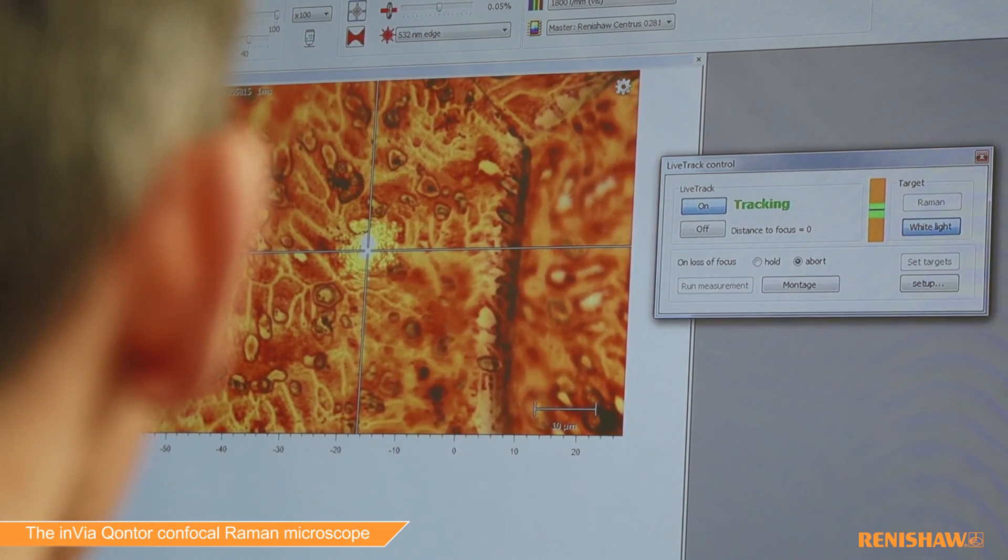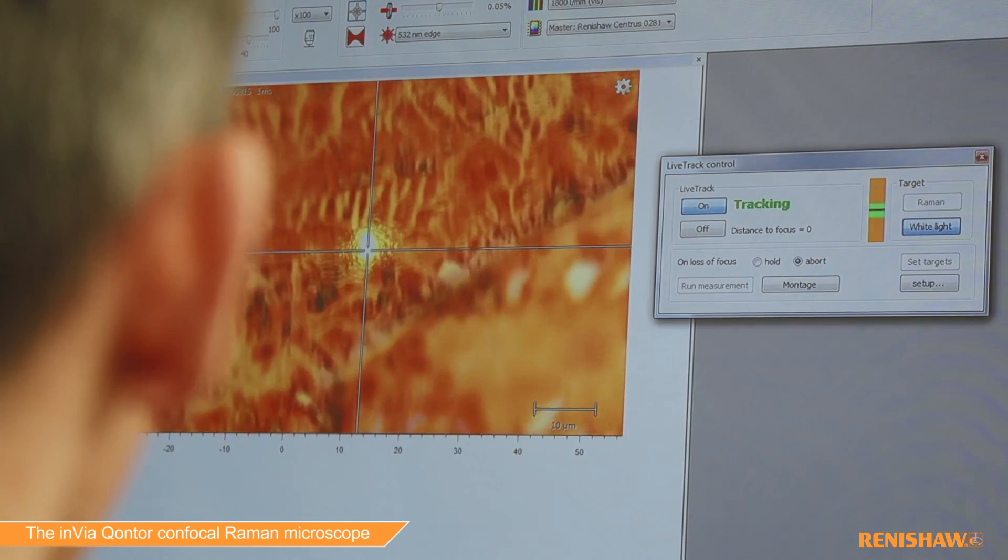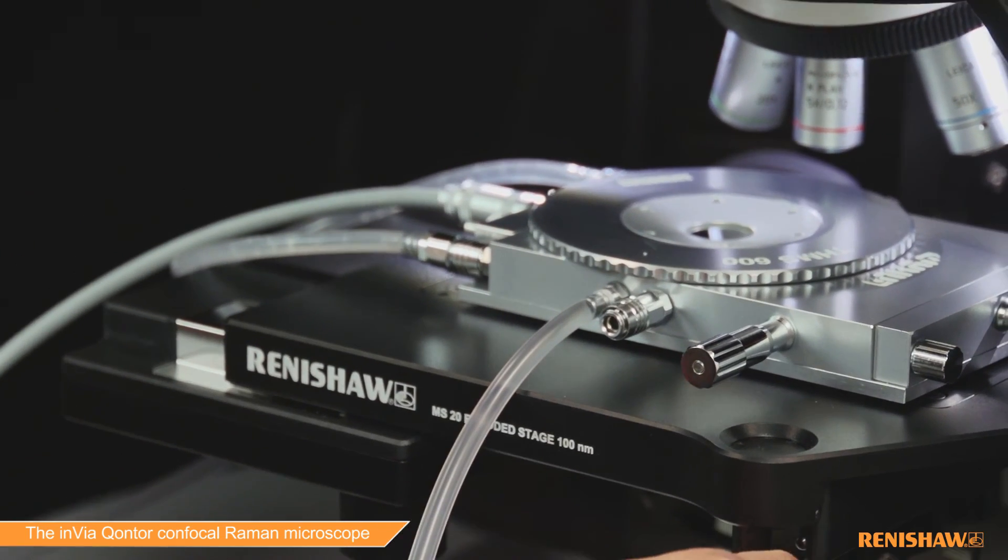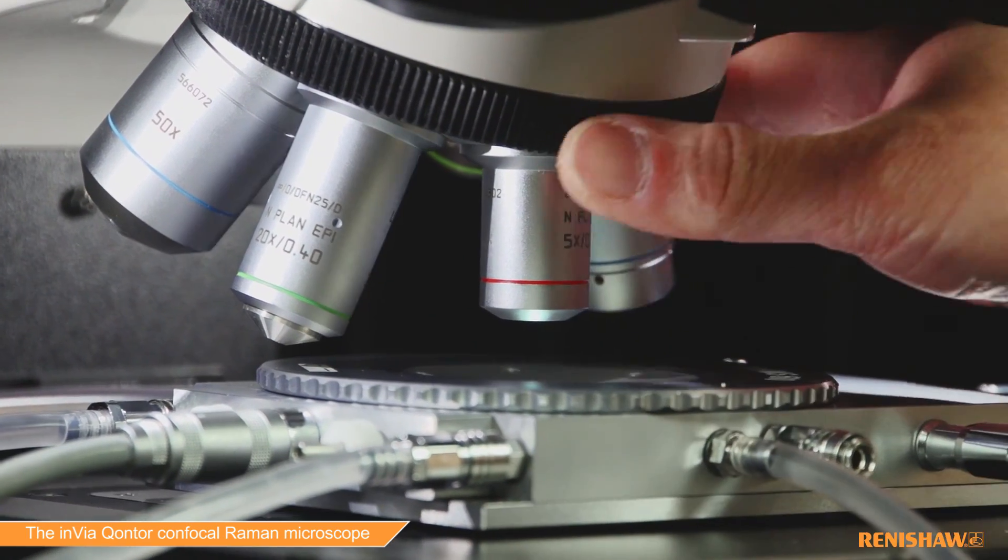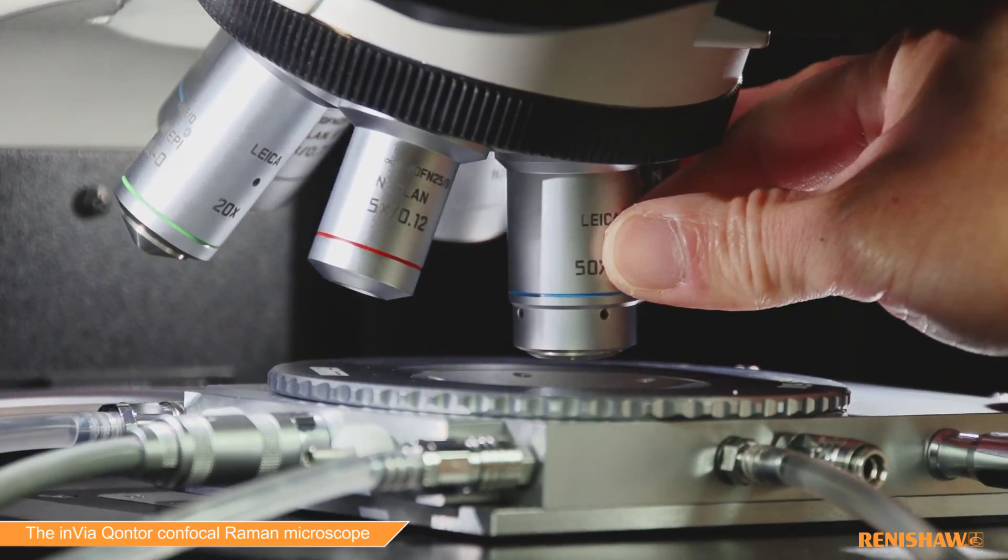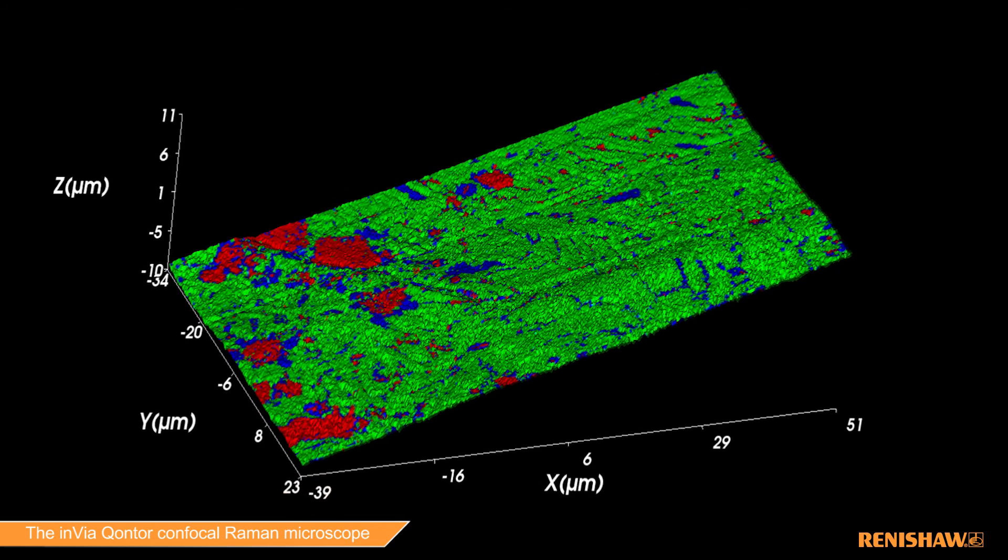In white light mode, this enables simple navigation to find regions of interest. In Rama mode, LiveTrack ensures focus is tracked, whether performing dynamic measurements such as sample heating and cooling or using one of Envia's chemical image generation techniques.